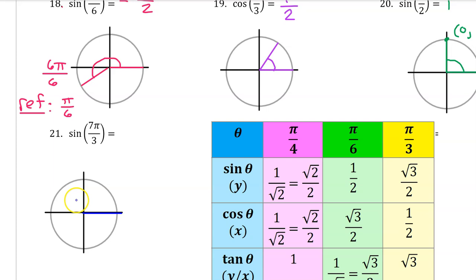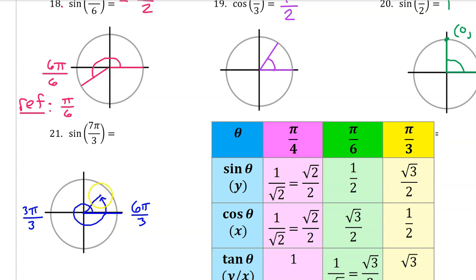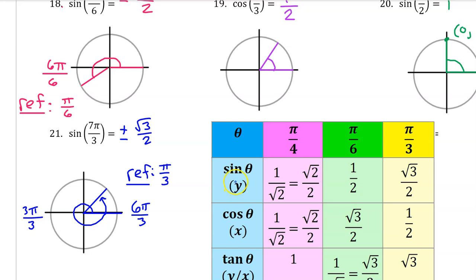To figure out the quadrant in which 7 pi over 3 falls, let's think of pi as 3 pi over 3 and 2 pi as 6 pi over 3. That means 7 pi over 3 will be 6 pi over 3 plus an extra pi over 3 — in other words, we go all the way around to 6 pi over 3 and then pi over 3 more. Since the reference angle is pi over 3, the sine of 7 pi over 3 will be plus or minus the sine of pi over 3, which is radical 3 over 2. In the first quadrant, y-values are positive, so the sine is positive radical 3 over 2.